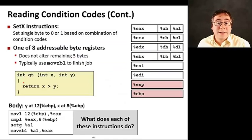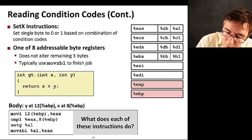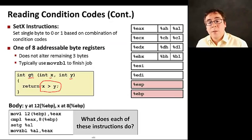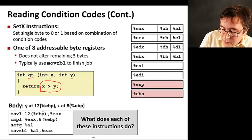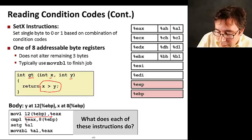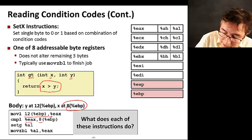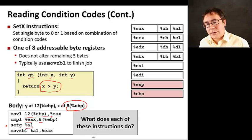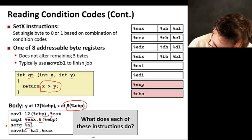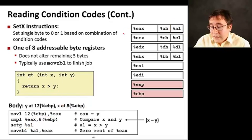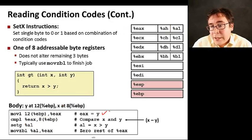Let's see an example of using the set instructions to read condition codes. Here we have a function called GT that takes x and y as parameters, and we want to return whether x is greater than y. In the body, we're getting y and storing it in EAX. Now we're comparing y with x because x is stored in 8 from EBP. Now we're doing set greater in AL.